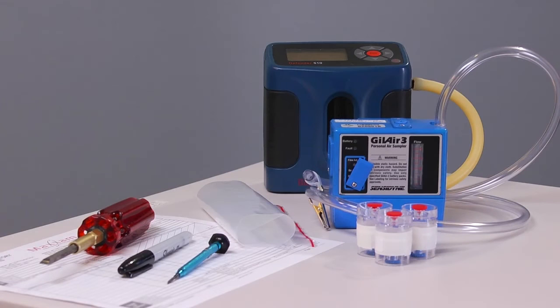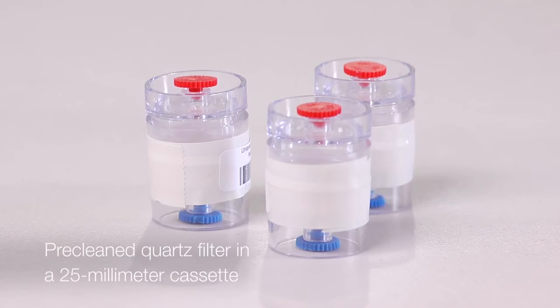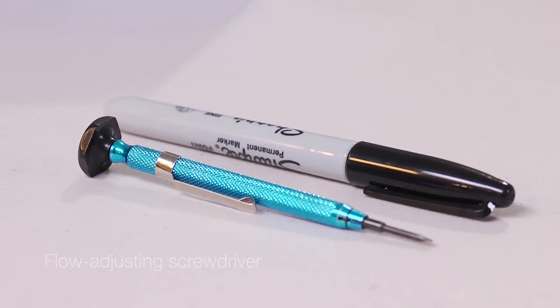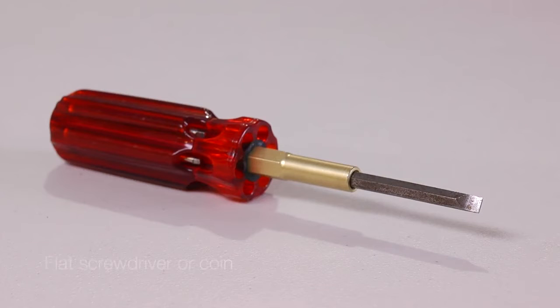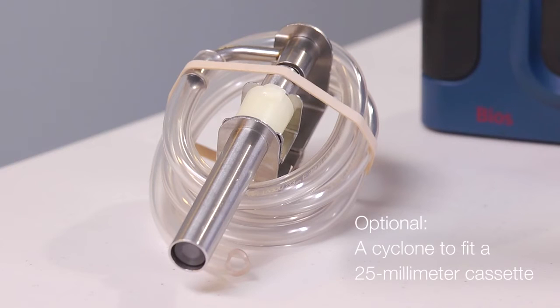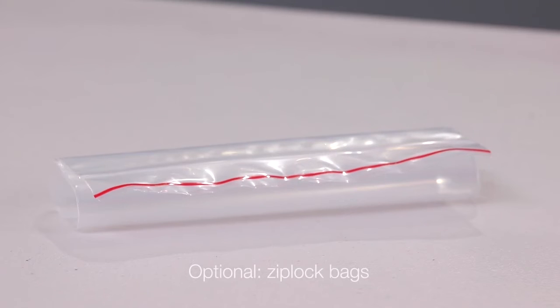To collect samples for elemental carbon, you will need: pre-cleaned quartz filter in a 25-millimeter cassette, sampling pump, flexible tubing, calibrator, flow-adjusting screwdriver, flat screwdriver or coin, laboratory request form or chain of custody, and optionally, a cyclone to fit a 25-millimeter cassette and Ziploc bags.